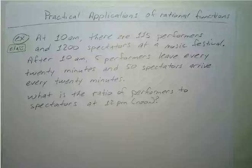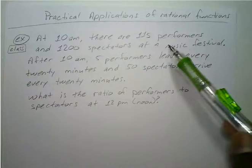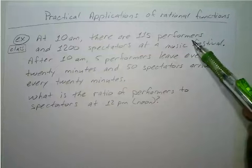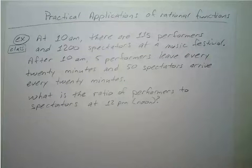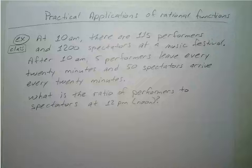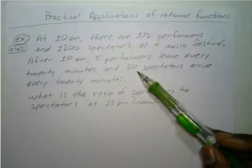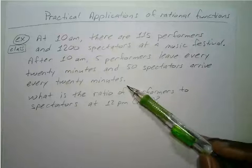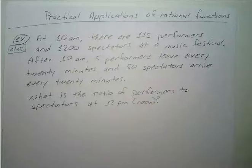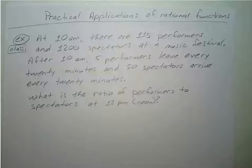At 10 a.m. there are 115 performers and 1,200 spectators at a music festival. After 10 a.m., 5 performers leave every 20 minutes and 50 spectators arrive every 20 minutes. What is the ratio of performers to spectators at 12 p.m. noon?